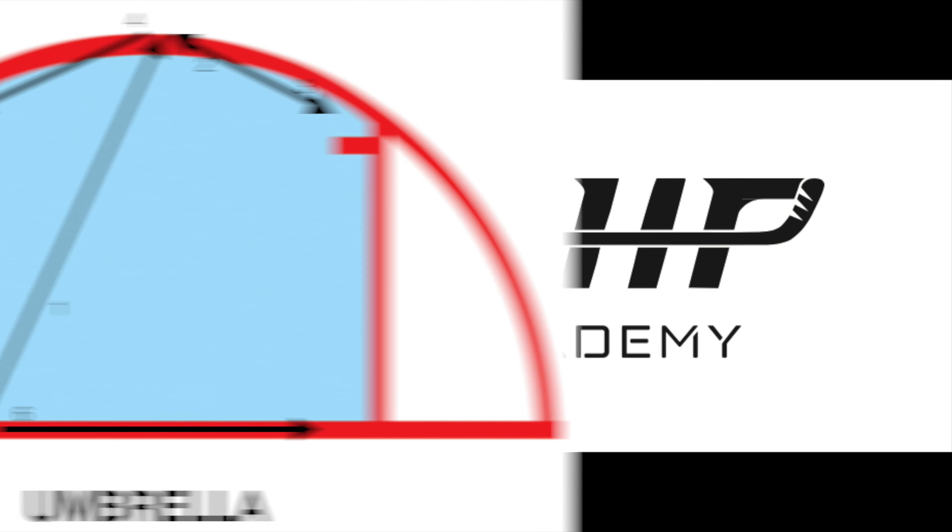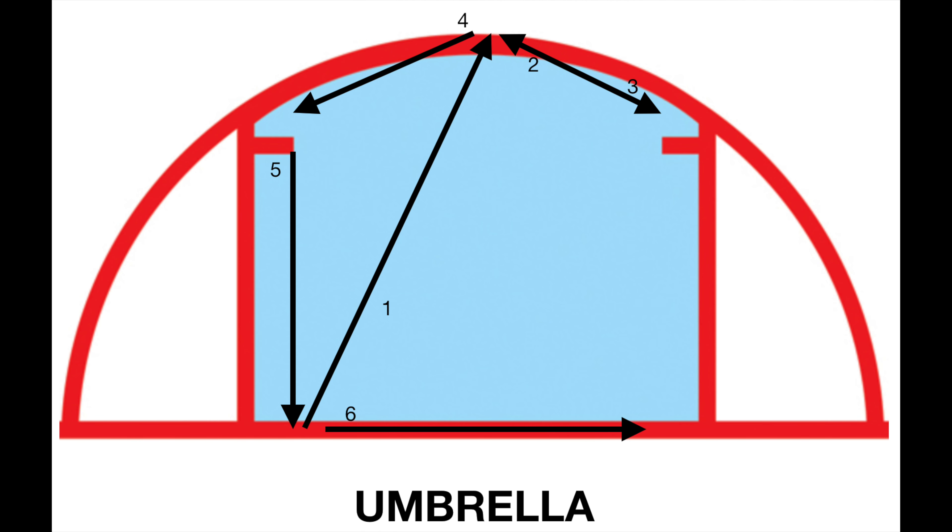We start the umbrella on either the left or the right post. Let's say we start on the left post in good post position as if the puck was in the corner. Now we reload out to the top of the crease.